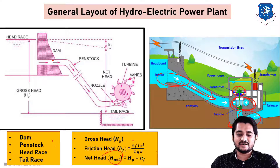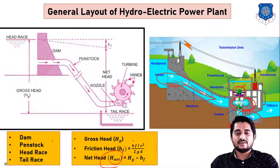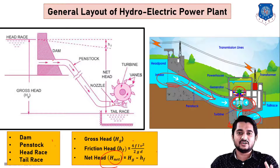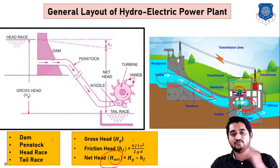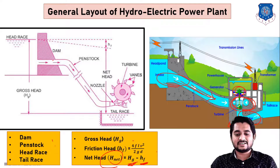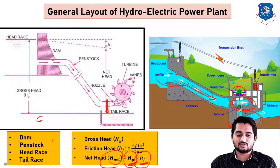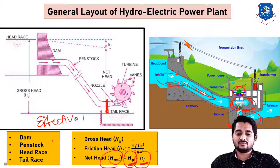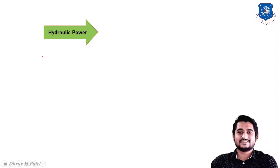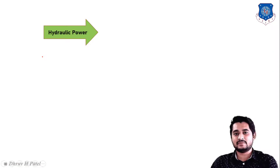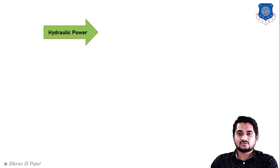Net head means the effective head available at the inlet of the turbine. It is the difference between gross head and friction head at the inlet section of the turbine. Net head is also called effective head.